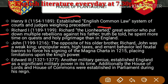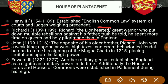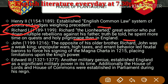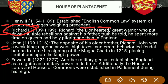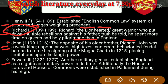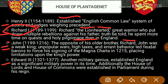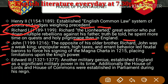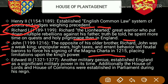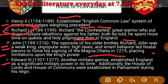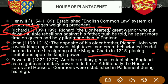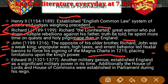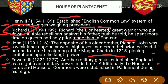John was the opposite of his older brother Richard — a weak king. His unpopular rule, high taxes, and errant behavior led feudal barons to force his signing of the Magna Carta in 1215, placing limitations upon the king's power. The next one is Edward the Third — another military genius who established England as a significant military power. The House of Lords and House of Commons were established in Parliament during his reign.